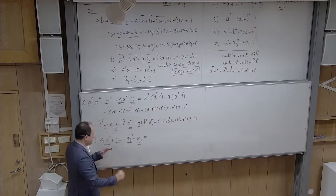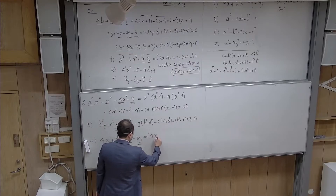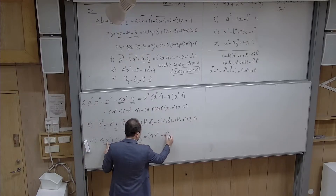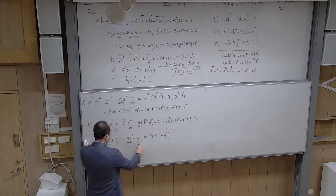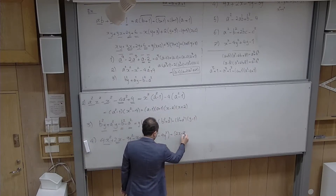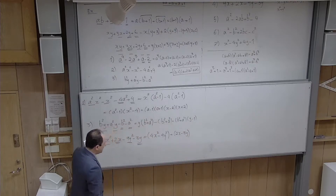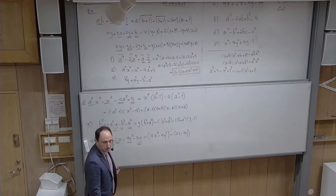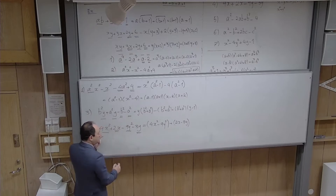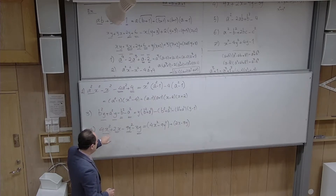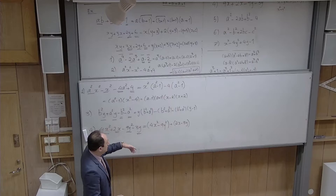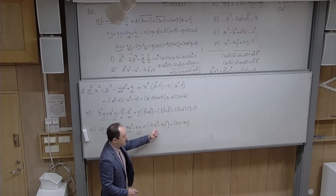Another example: factorize 3x² + 5x − 8. Using the trick: multiply 3 × (−8) = −24. Find two numbers whose sum is 5 and product is −24. Those are 8 and −3. So break 5x into 8x − 3x, giving 3x² + 8x − 3x − 8. Group: x(3x + 8) − 1(3x + 8) = (3x + 8)(x − 1). The method is systematic even though finding the two numbers still requires some guesswork.